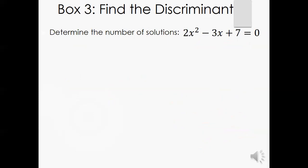All right. Box three, I would like for you to find the discriminant and determine. So you have 2x squared minus 3x plus 7.